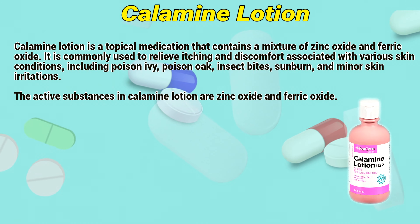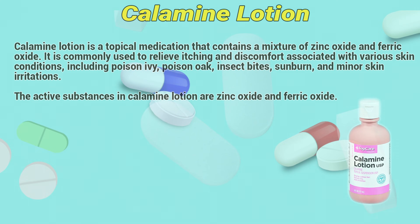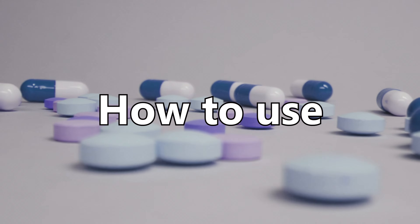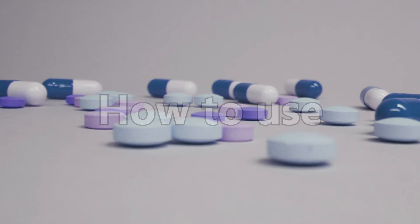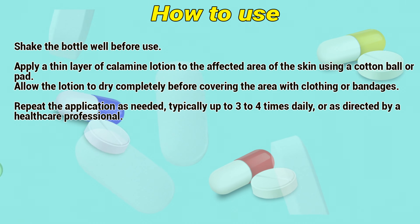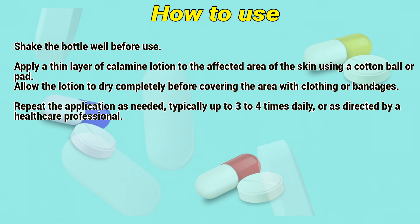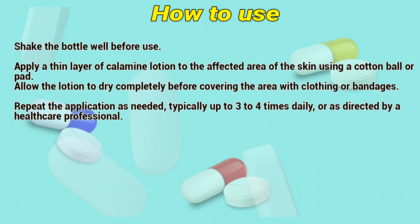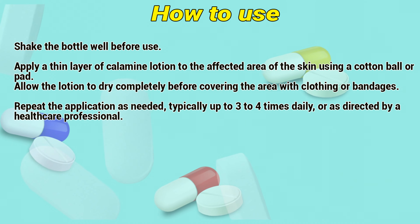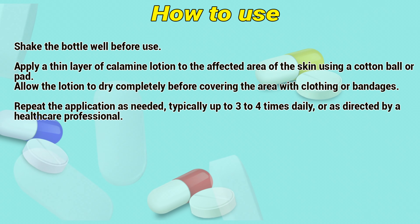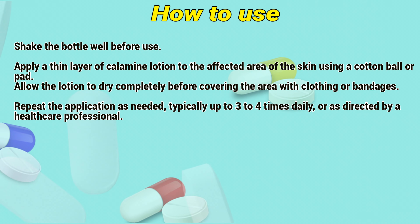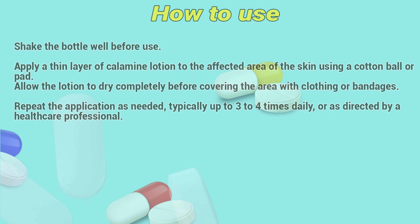The active substances in Calamine lotion are zinc oxide and ferric oxide. How to use: Shake the bottle well before use. Apply a thin layer of Calamine lotion to the affected area of the skin using a cotton ball or pad. Allow the lotion to dry completely before covering the area with cloth or bandages. Repeat the application as needed, typically up to 3–4 times daily or as directed by a healthcare professional.